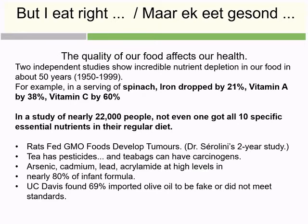Another problem is that food contains toxins. GMO foods, for example, can carry pesticides. Tea — especially in tea bags — can contain cadmium, lead, and acrylamide at high levels. Nearly 80 percent of infant formula has been found to contain such contaminants. Additionally, 69 percent of imported olive oil was found to be fake or did not meet standards.